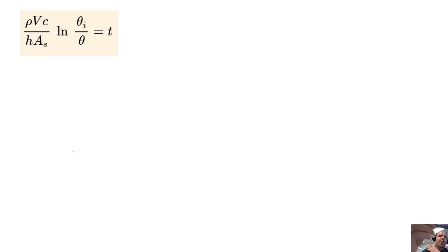We can solve for time directly. Our theta sub i is going to be our initial temperature difference, so this would be 1150 minus 325, and here this is our final temperature difference. Our final temperature difference is going to be the 450 minus 325. Then we just put in all of our problem characteristics in there and we will get the total time to go from our initial temperature down to this final temperature.